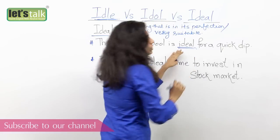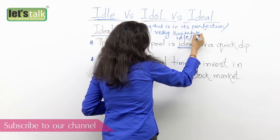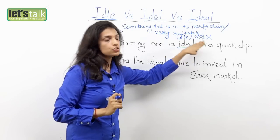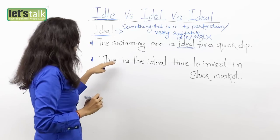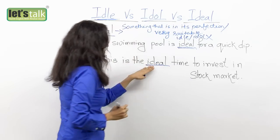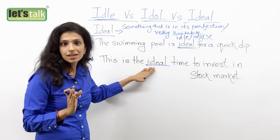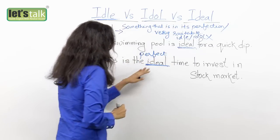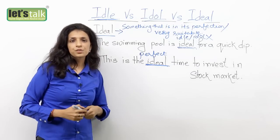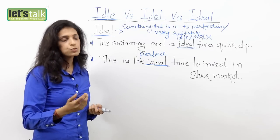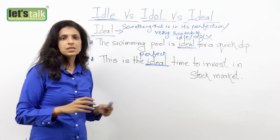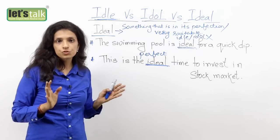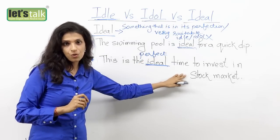Do not use the word idle or idol here because they would not make sense. When something is the most suited or the best option, you say ideal. In the next example: 'This is the ideal time to invest in the stock market.' Supposing stock prices are low, it's the right time, the best or perfect time to invest. So use the word ideal. And when you're helping friends solve their problems and you want to suggest something, you tell them, 'I think this is the ideal thing to do' — suggesting the best or perfect course of action.